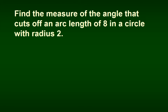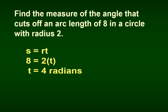Let's find the measure of the angle that cuts off an arc length of 8 in a circle with radius 2. Using s equals r times t: s is 8 and r is 2, so 8 equals 2 times t. Dividing both sides by 2, t equals 4 radians.